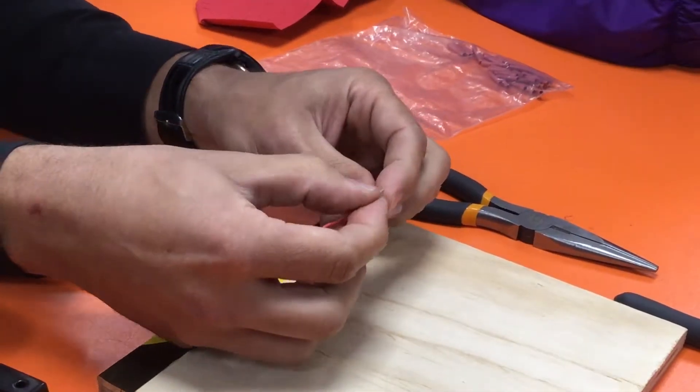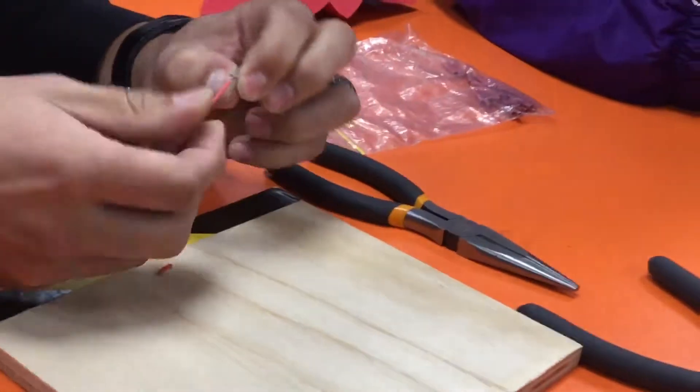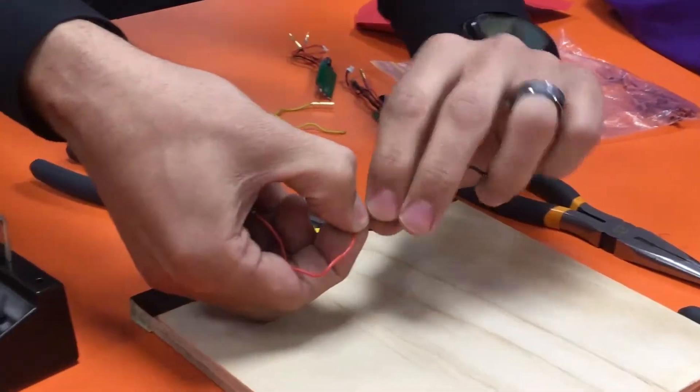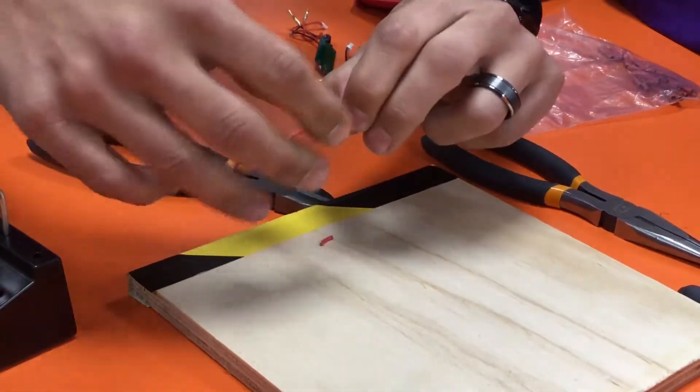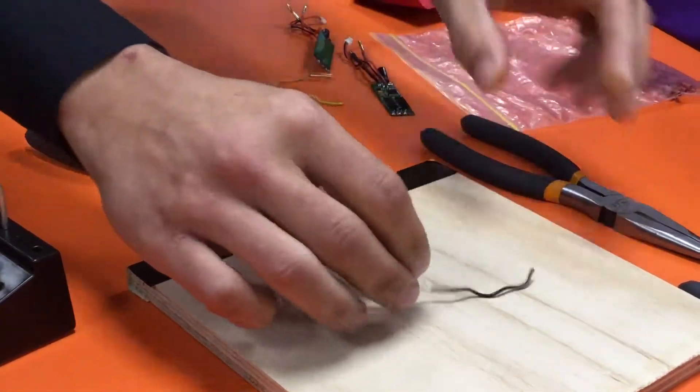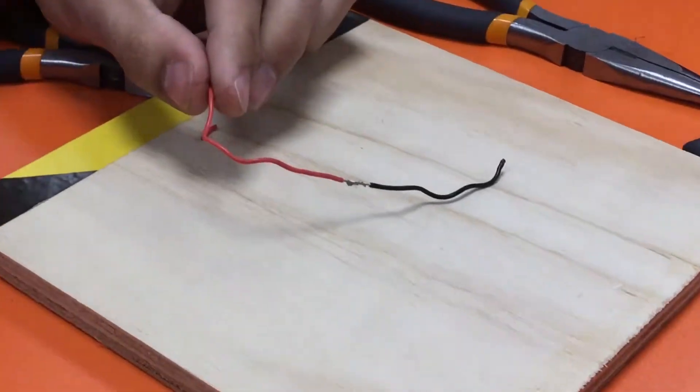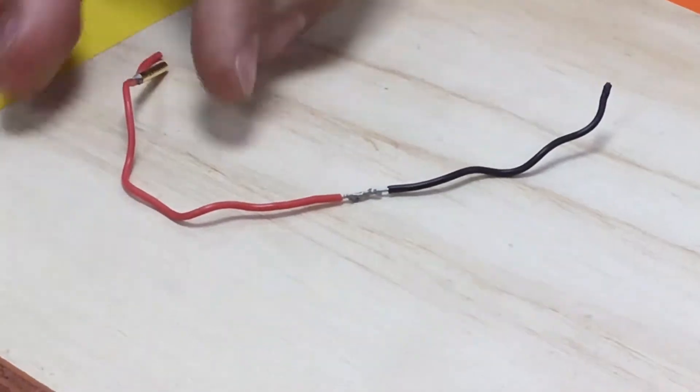The third part is we twist them together. So make sure each wire twists around the other. It should end up looking almost good enough to use without soldering. It's not, but it looks almost good enough.